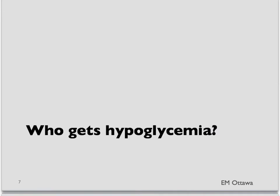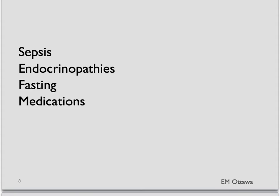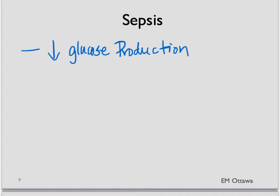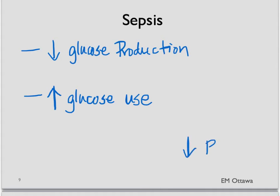Who's at risk of getting hypoglycemic? There are four main broad categories: sepsis or infection, some problem with the endocrine system, fasting, and medications or toxins. Sepsis causes hypoglycemia by two main mechanisms: it first inhibits gluconeogenesis, and it also increases utilization of glucose in the periphery. You don't make enough and you use up what's already made, and therefore your blood sugar drops.